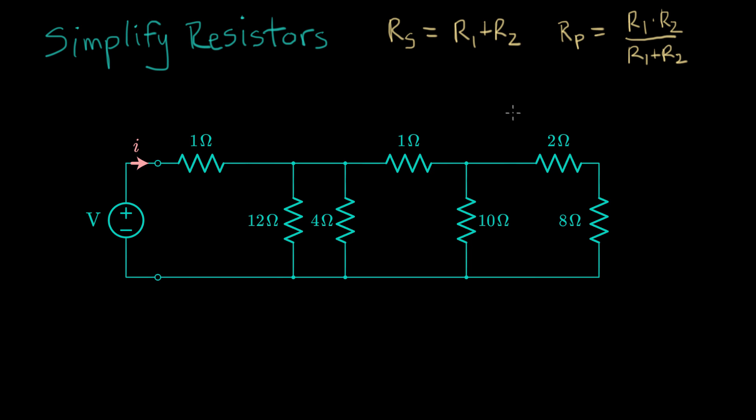And if there's three resistors or more in parallel, it's a little more complicated. The formula is one over R parallel equals one over R1 plus one over R2 plus one over R3, et cetera, for as many resistors as you have. These two parallel formulas do the same thing. This one's more convenient when you just have two resistors.